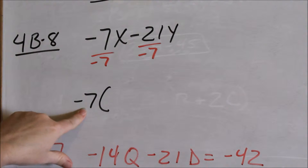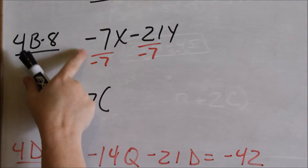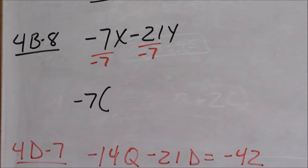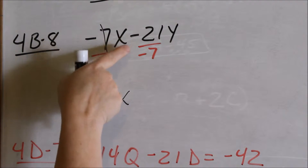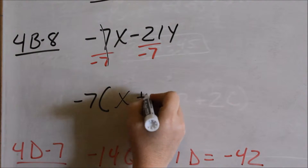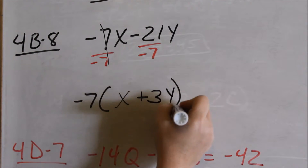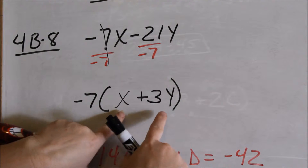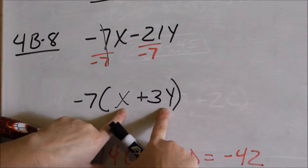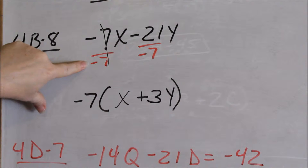You are essentially dividing out a negative 7 out of each term, and it has to be written out in front. When you divide a negative 7 out of negative 7x — a negative divided by a negative is a positive, and 7 divided by 7 cancels — so the only thing you have left is x.